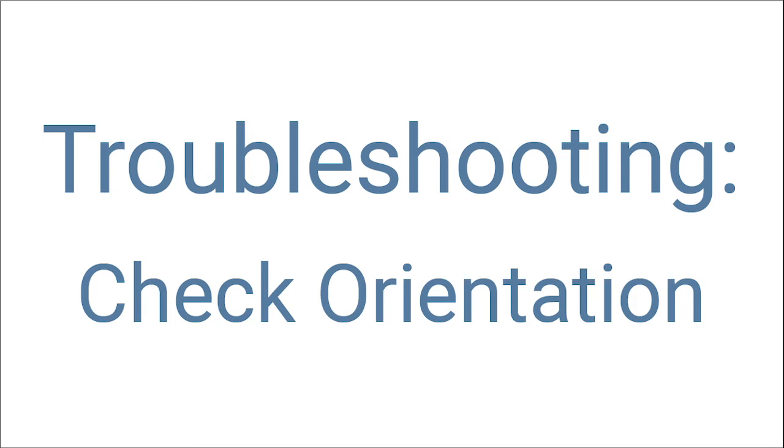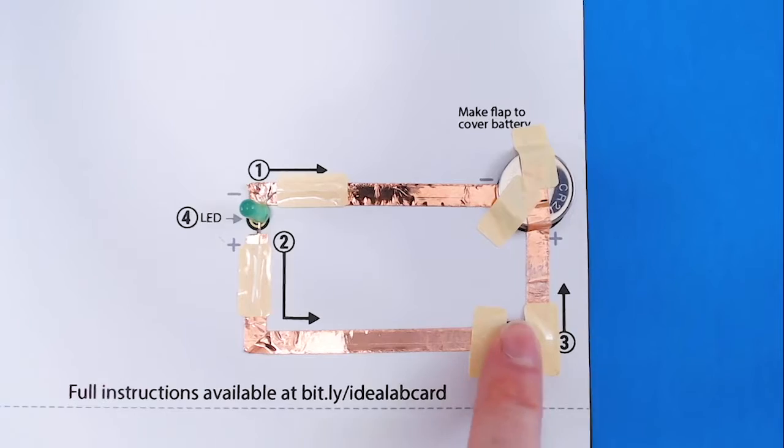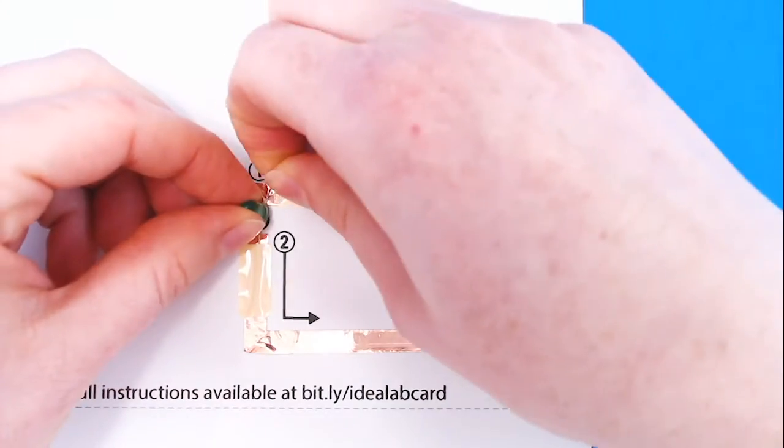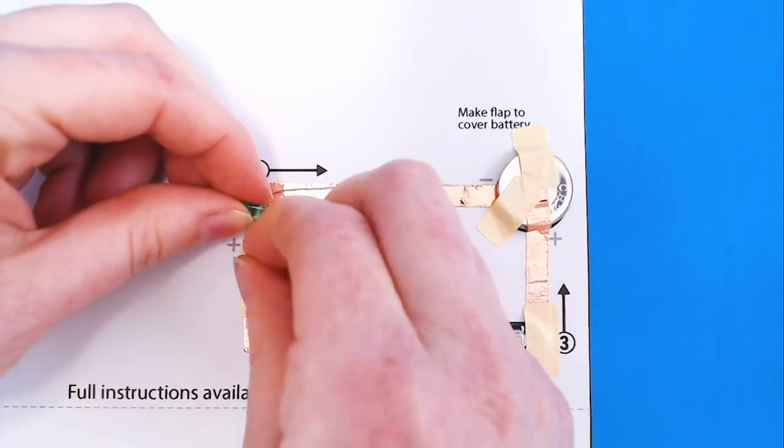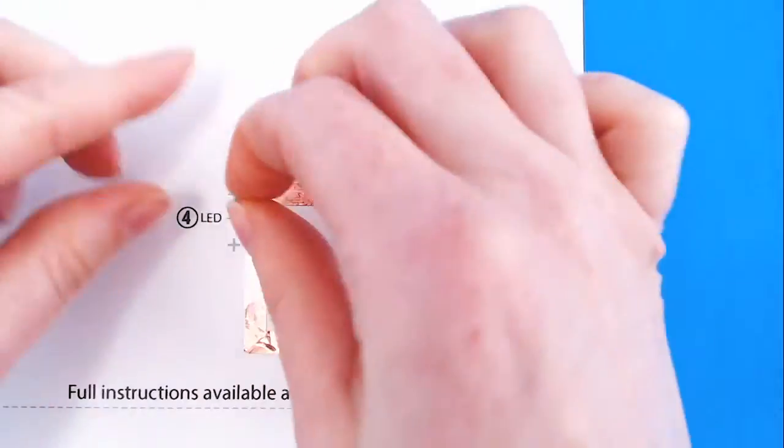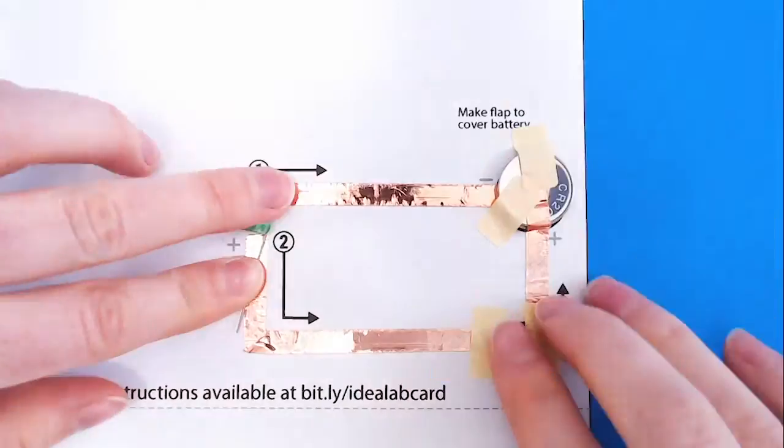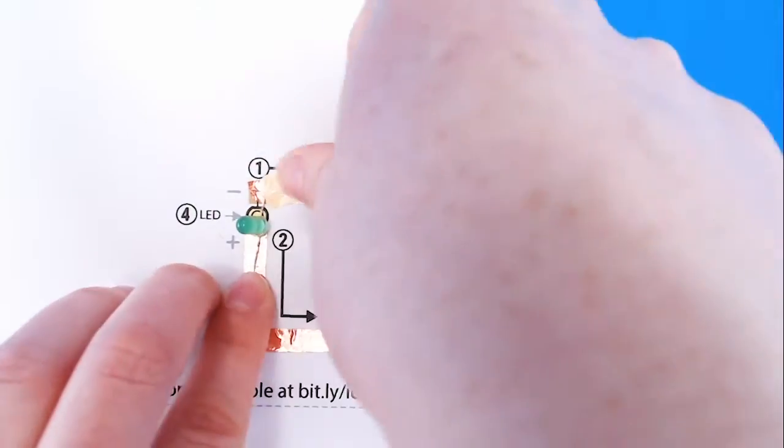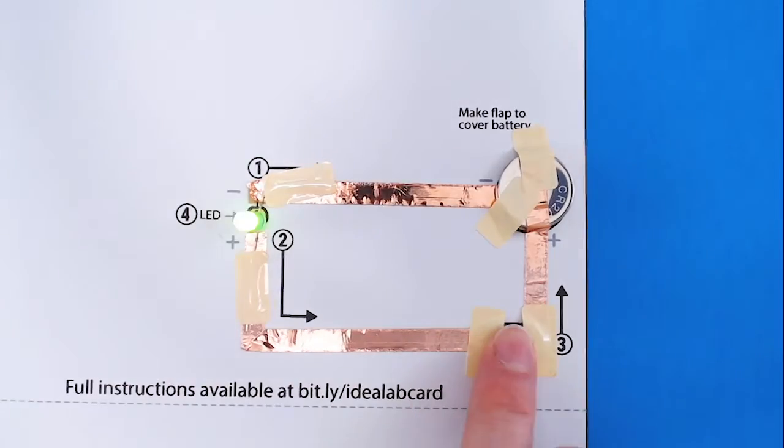If all the connections look secure but the project is still not working, let's check the LED. Maybe it got put in backwards. Since I use tape to attach it, I can carefully peel it up and turn the LED around so it's placed the right way and then re-tape. That fixed it!